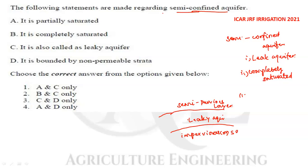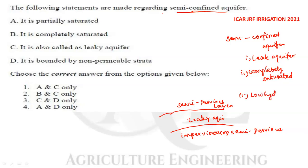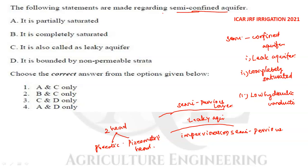The piezometric head of a semi-confined aquifer is always greater than the water table head. Evaluating the statements: it is completely saturated — correct; it is also called a leaky aquifer — correct; it is bounded by an impervious or semi-pervious layer — correct. Statements B and C are correct; option 2 is the correct answer.